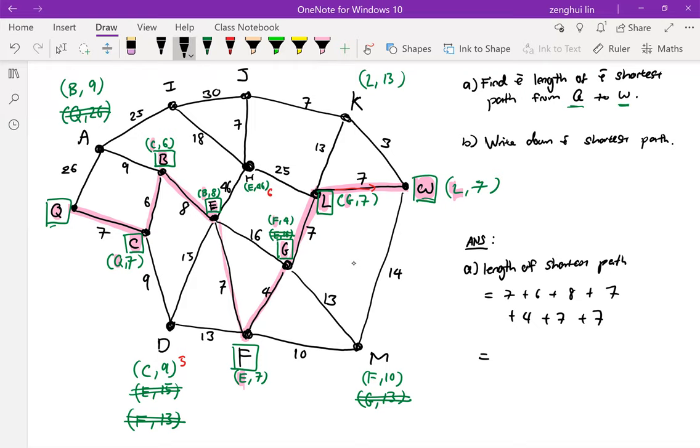And for part B, to write down the shortest path, you can simply list it as Q, C, B, E, F, G, L, and W. That's it. Done.